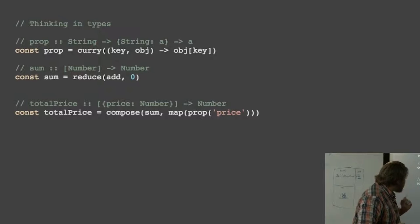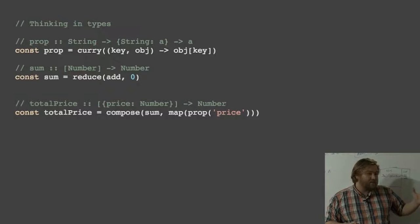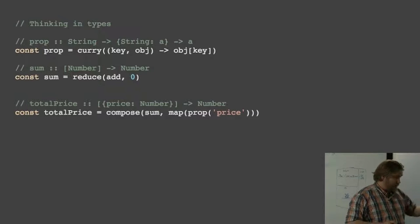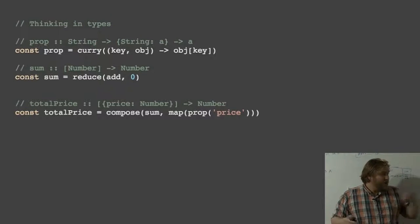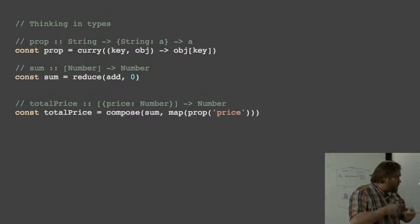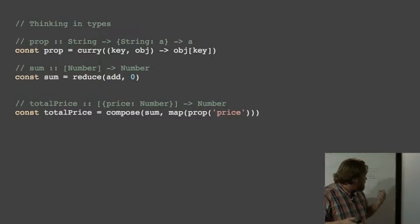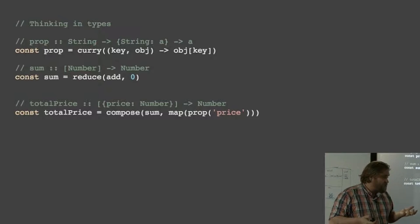The second thing we do is we take sum, and we can use our reduce function, partially apply it. In this case, we use add, which just adds two numbers and a zero, and then reduce becomes a sum function. Because if you give it a list of numbers, it'll accumulate over the total by adding the values together in each step and return the sum of the list of values.